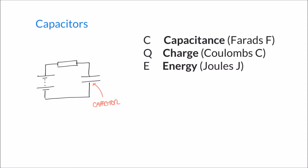Welcome to this video on capacitors and some of the theory related to capacitors. In this video we're going to look briefly at the construction of capacitors and some key formulas relating to capacitors. A capacitor is a component that stores charge in a circuit. The key terms we'll introduce are: C for capacitance, measured in farads (F); Q for charge, measured in coulombs (C); and E for energy, measured in joules (J).